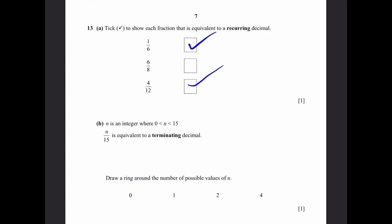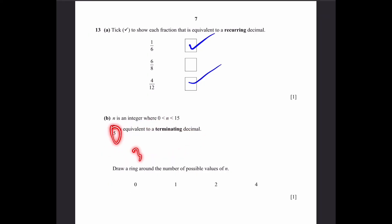B. N is an integer where 0 less than n less than 15. N by 15 is equivalent to a terminating decimal. Draw a ring around the number of possible values of n. So n can be between 0 and 15 but not 0 and not 15. So if it has to be equal to terminating decimal, notice that 15 is equal to 3 times 5 and 1 by 5 is terminating but 1 by 3 is recurring so we need to get rid of the 3 in the denominator and for that we need a numerator which is a multiple of 3. So n can be 3, 6, 9 or 12 and these will all make it terminating decimal. Four possible values.